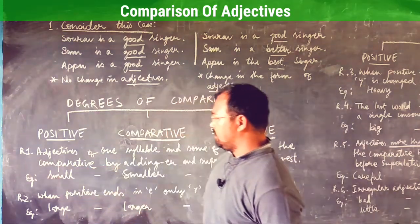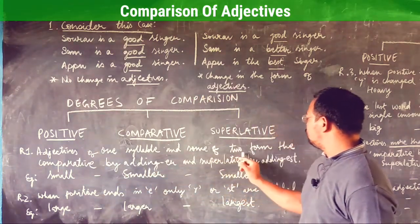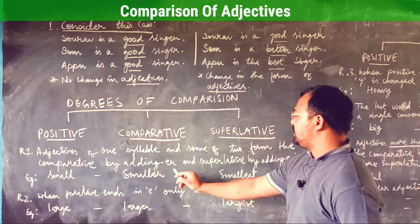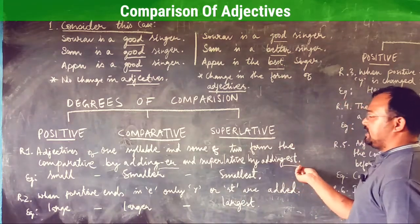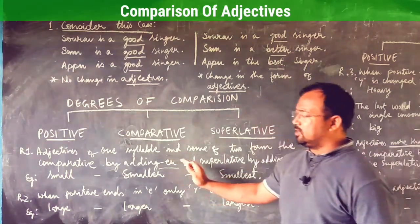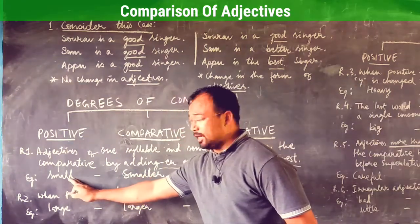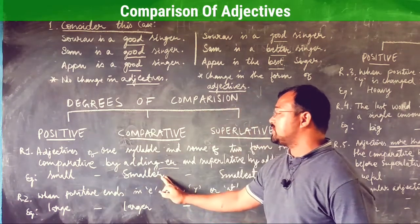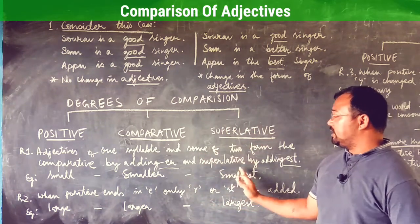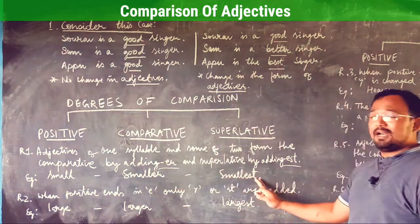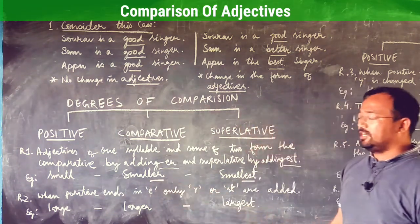Rule number one: adjectives of one syllable and some of two syllables form the comparative by adding -er and the superlative by adding -est. For example, the word 'small' — in the comparative degree you add -er, so small becomes smaller, and in the superlative degree you add -est, so small becomes smallest.